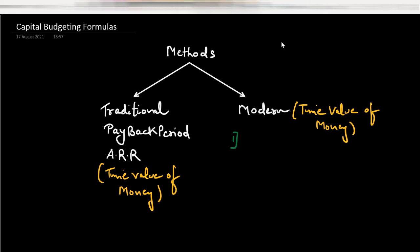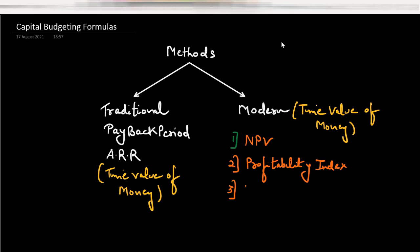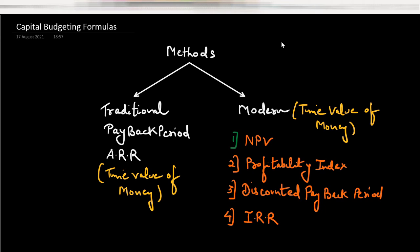If we talk about modern methods, there are several. The first is the NPV method — NPV means net present value, where we use a discounting factor to calculate present value. The second is the profitability index method. The third is the discounted payback period, which is an extension of the payback period. The fourth method is IRR, that is the internal rate of return. These are the methods we discussed in the previous lecture.